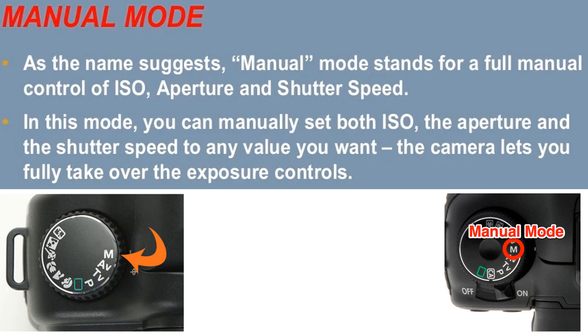Manual mode, as the name suggests, stands for full manual control of ISO, aperture, and shutter speed. In this mode, you can manually set ISO, aperture, and shutter speed to any value you want — the camera lets you fully take over all exposure controls.